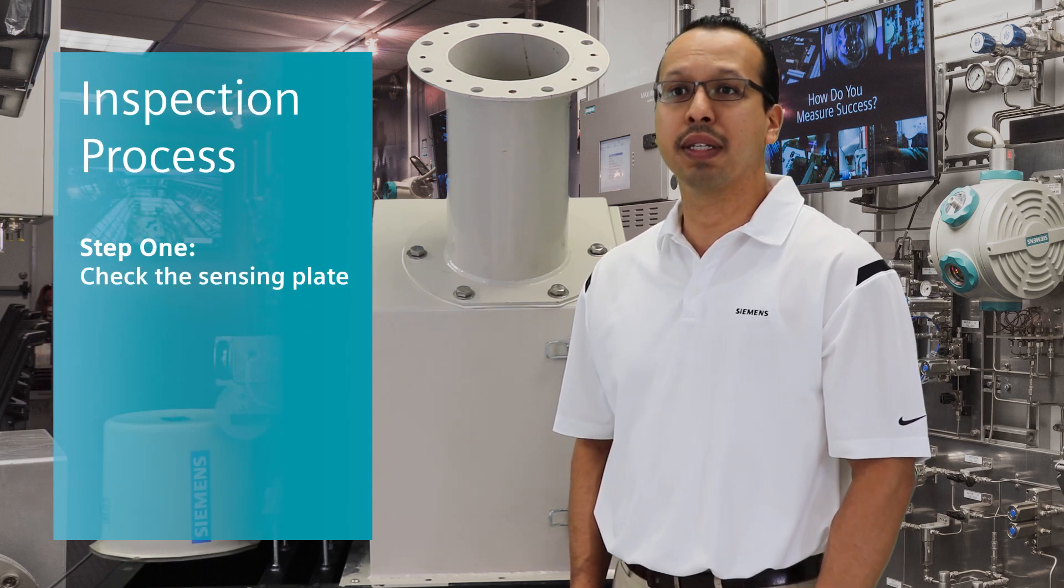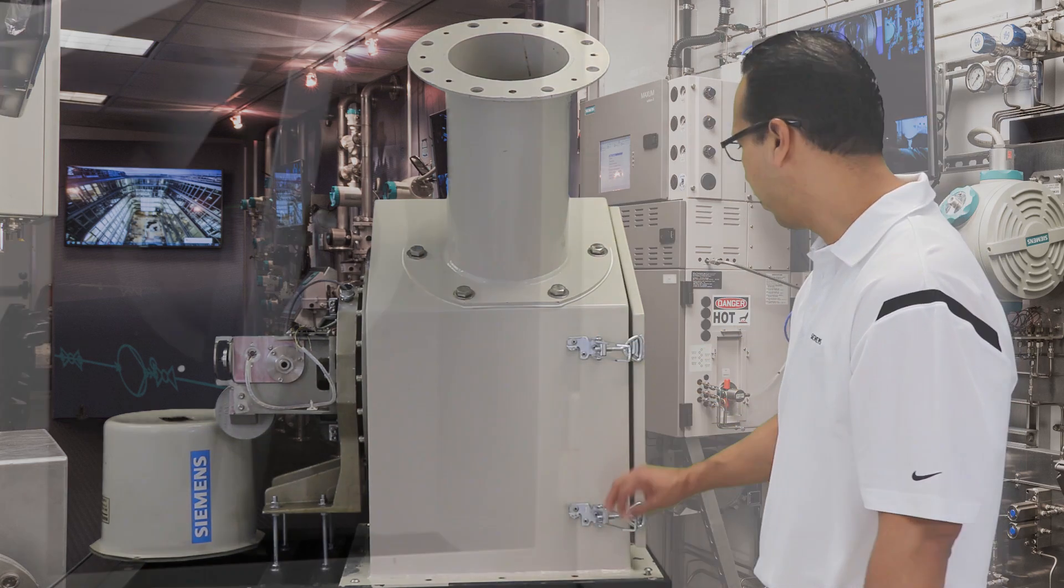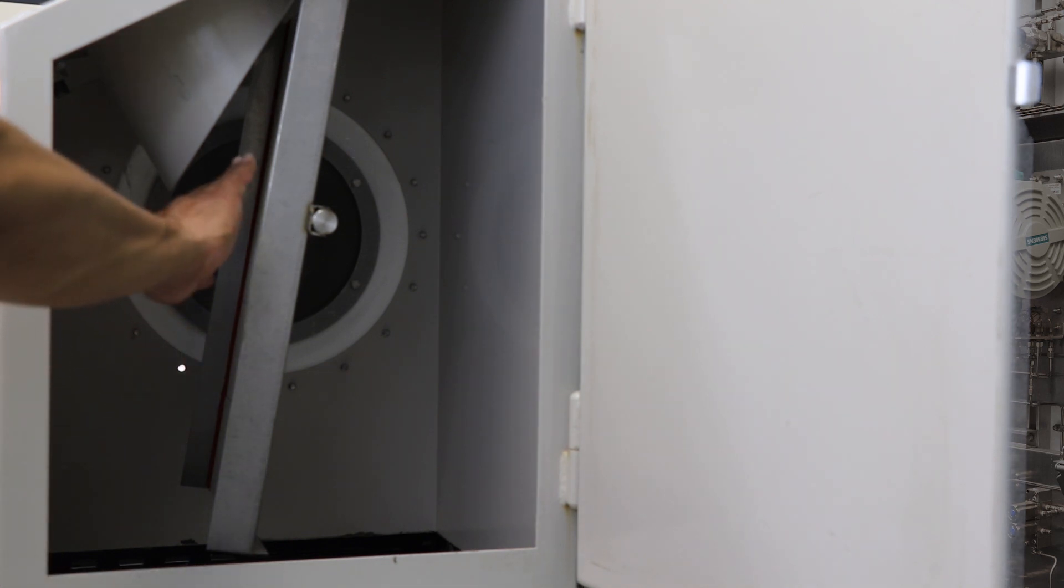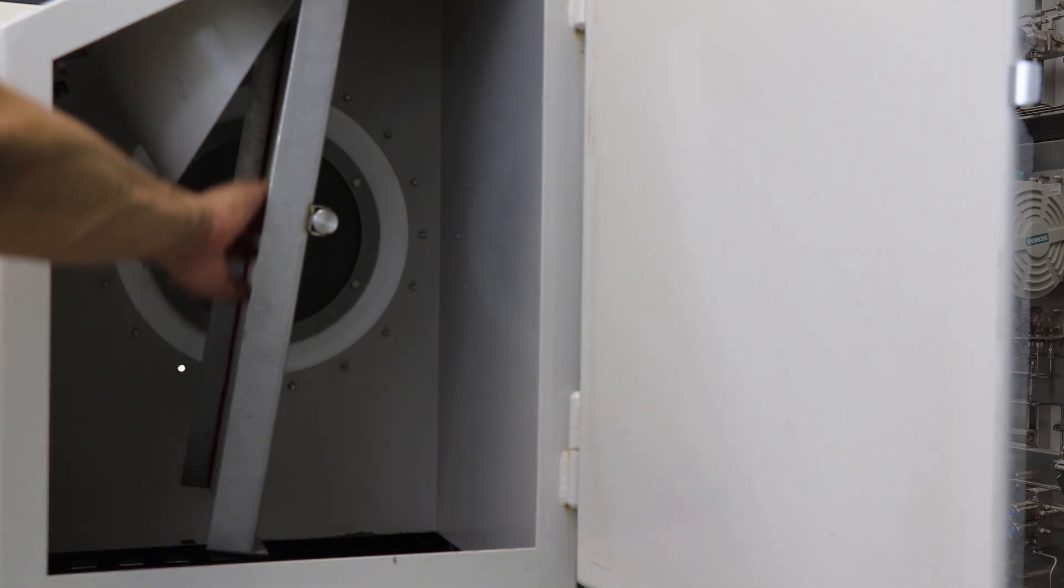The first thing we need to do is check the sensing plate. We do this by opening the doors and looking inside. After opening the door, look inside and make sure that the plate has no holes and that the liner on the plate is still intact.